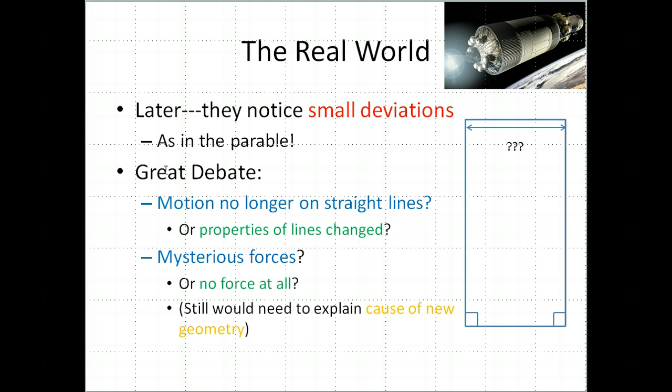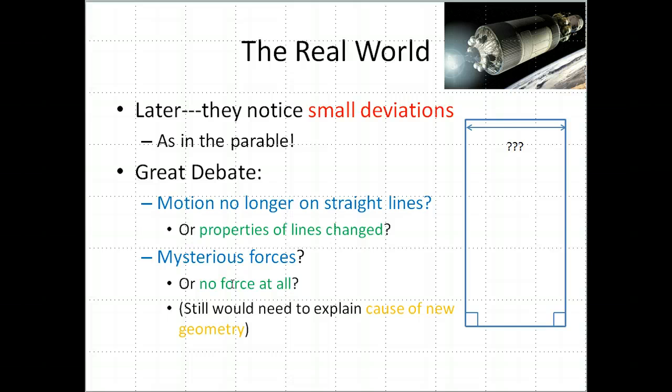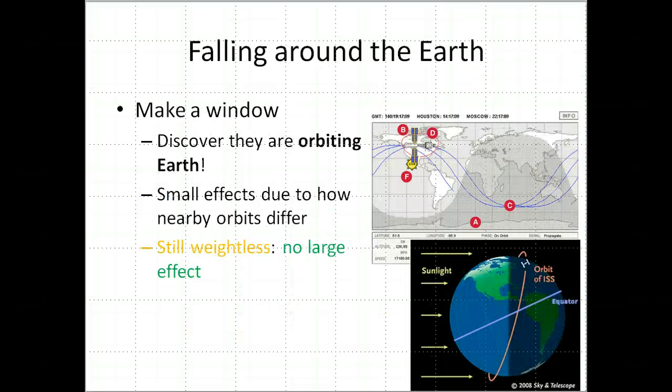What happened was they started out way off in interstellar space and never noticed this. Then later they started noticing these small deviations. They decide to make a window and discover that they're orbiting Earth now.